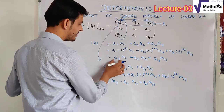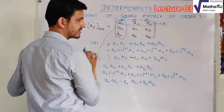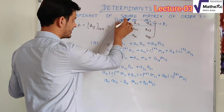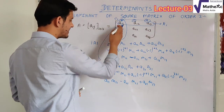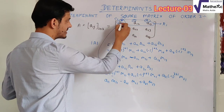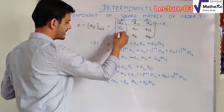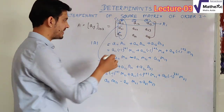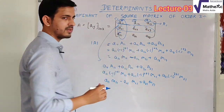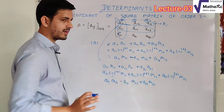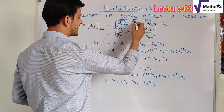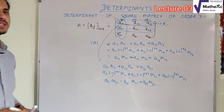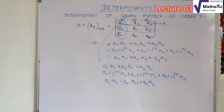When expanding along R1, the signs alternate as plus, minus, plus. When expanding along C1, the signs are also plus, minus, plus. Similarly, along R2, the signs start as minus, plus, minus, and along C2, the signs are minus, plus, minus. The signs alternate and you can write the expansion directly in terms of minors using this sign convention, without separately computing cofactors. In this way you can write the expansion of any 3x3 determinant.